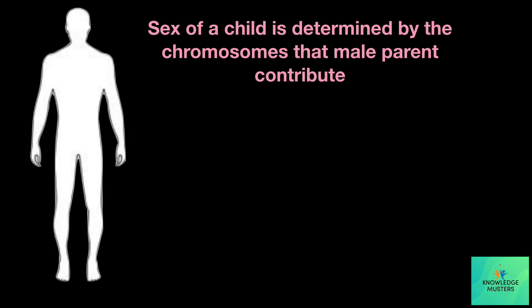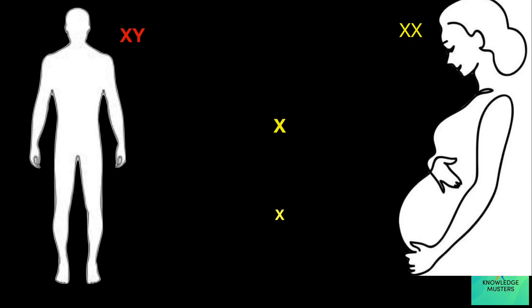The sex of a child is determined by the chromosomes that the male parent contributes. Male sex chromosomes are XY and female sex chromosomes are XX. The male can contribute either X or Y, but the female must contribute one of her X chromosomes.